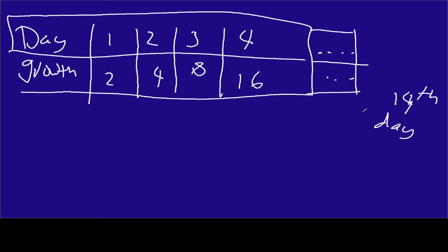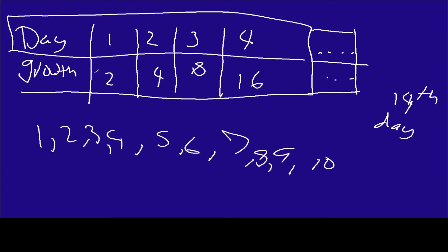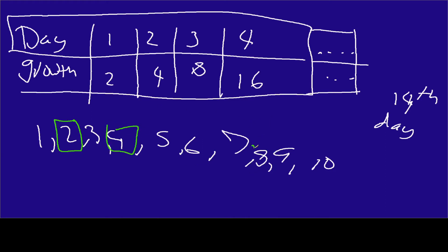First, let's talk about what a sequence is. A sequence is a function whose domain — that means the values inside it — is a subset of the counting numbers. So we've got counting numbers 1, 2, 3, 4, 5, 6, 7, 8, 9, 10, and so on. A sequence uses a subset of all the possible counting numbers, so our subset here would include 2, 4, 8, 16, and so on — we're not using every number.